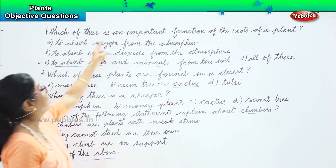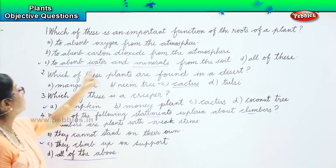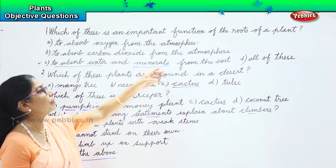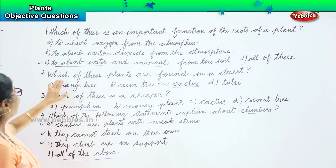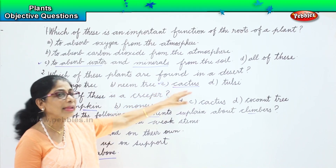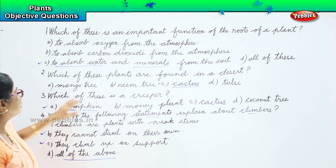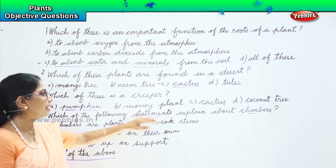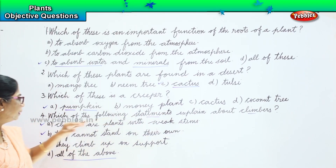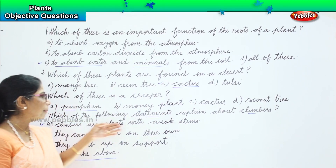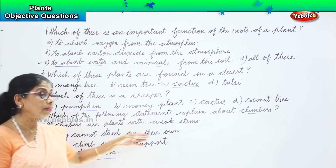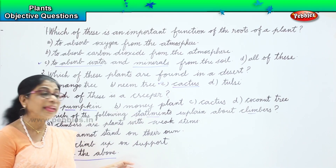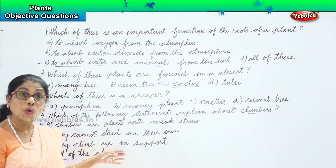Let's review all four answers together. First: the important function of the root of a plant is to absorb water and minerals from the soil. Second: cactus is found in a desert. Third: pumpkin is a creeper. Fourth: all three statements — climbers have weak stems, cannot stand on their own, and climb up on support — are all correct.